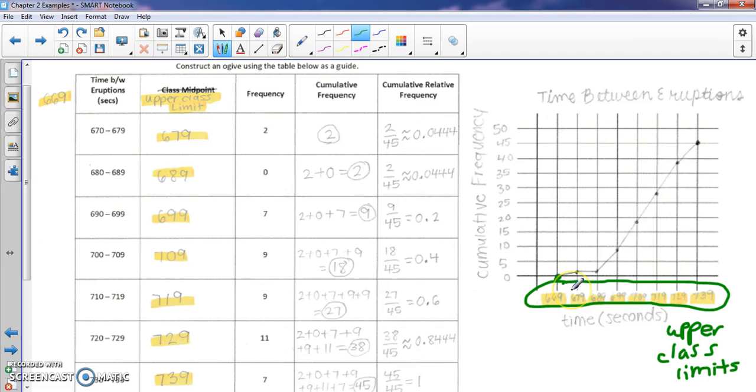Again, my axes are both labeled here, and then I have a title for my graph. So you want to make sure you're always doing that. So that is what an ogive is.